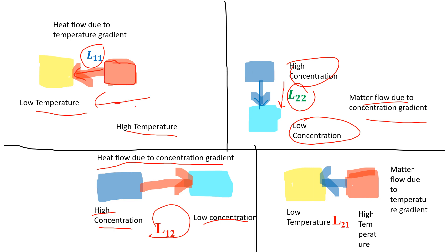Now consider two systems, one with low temperature and another with high temperature. We are expecting flow of heat, but instead there will be a flow of matter taking place. This is mentioned as L21.